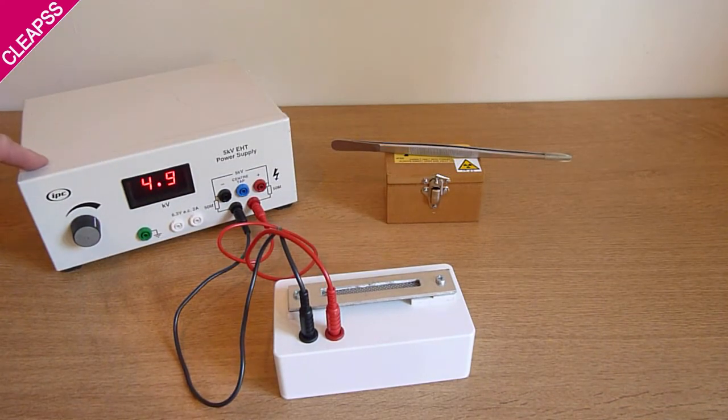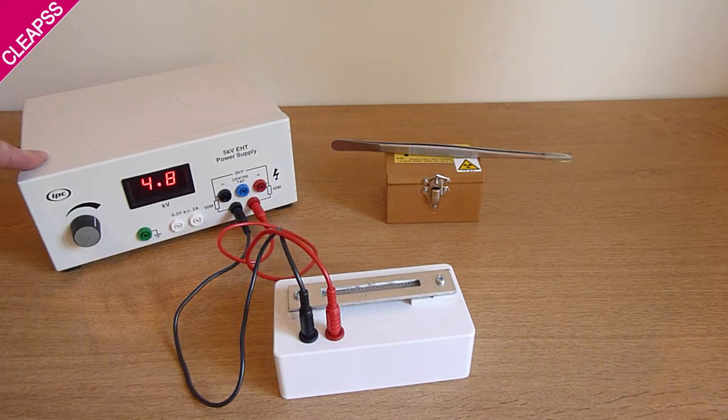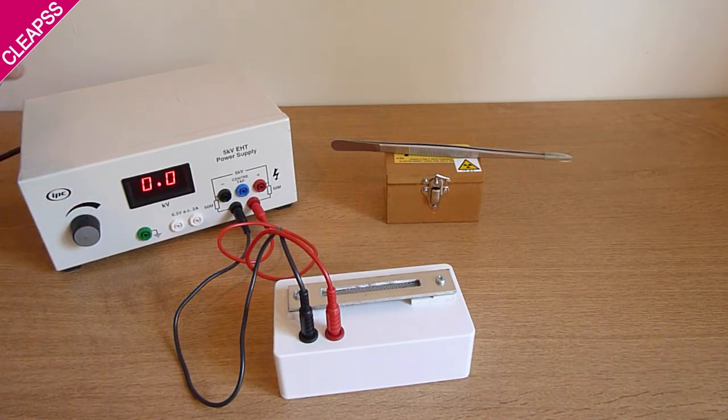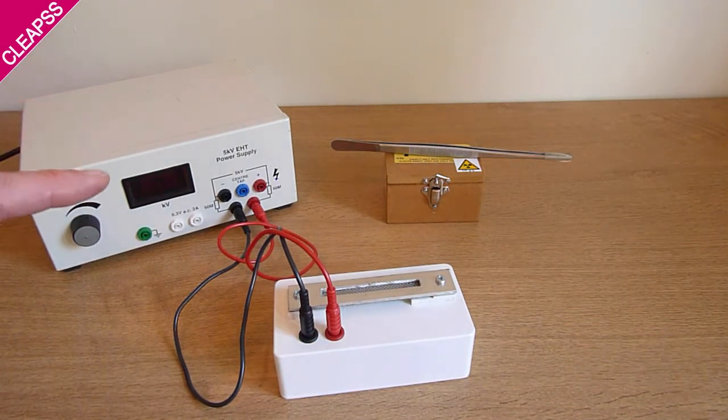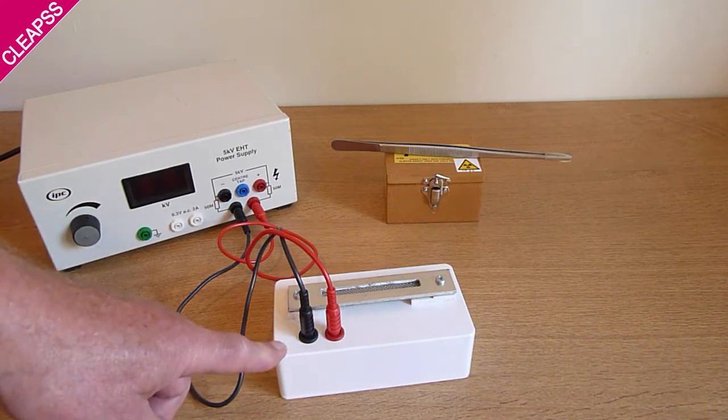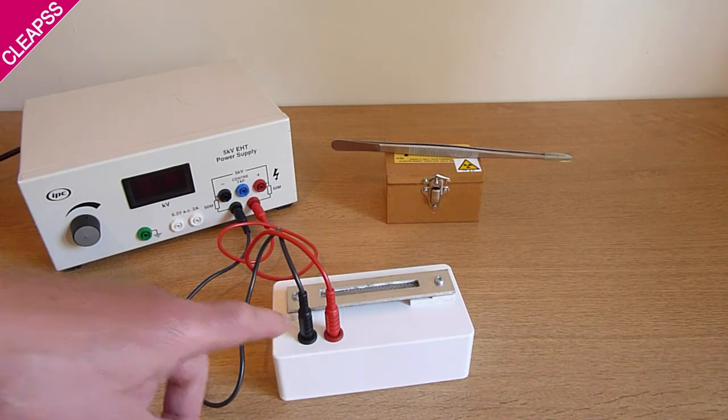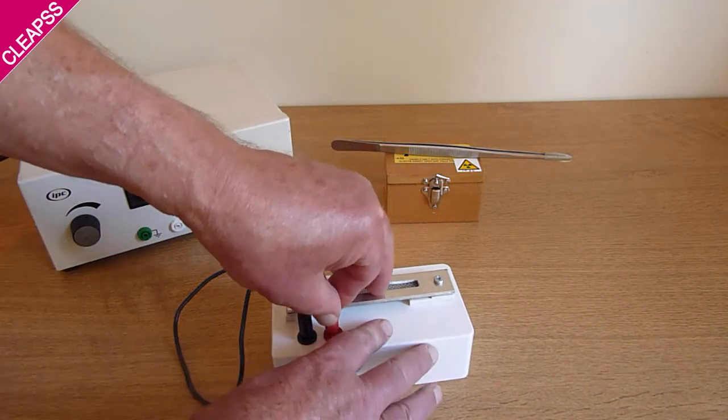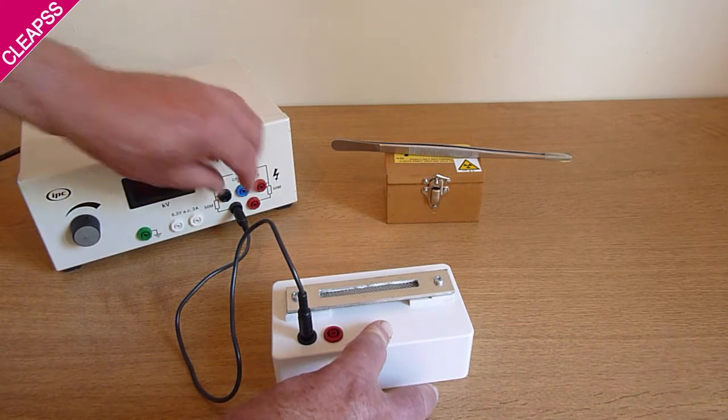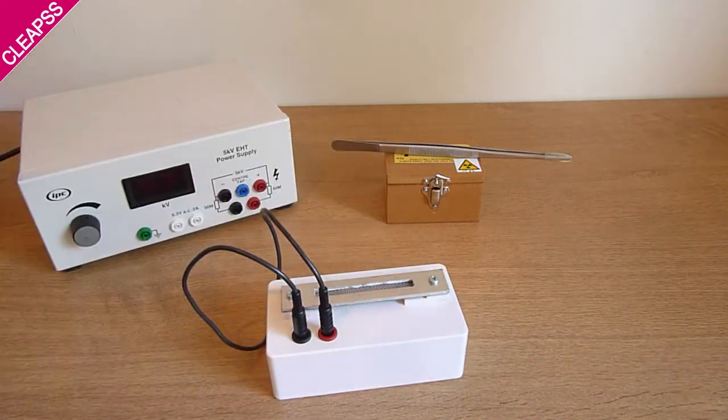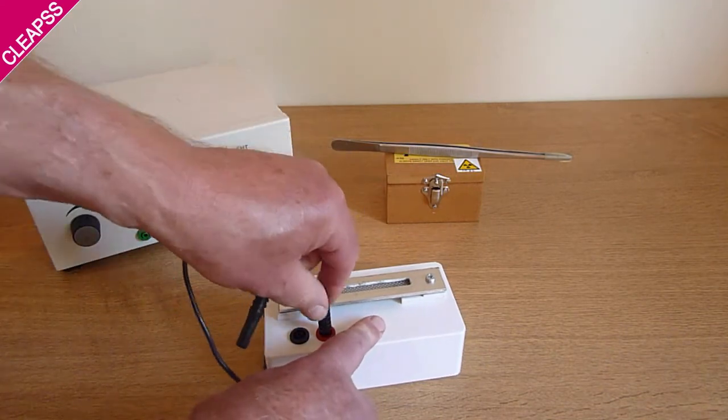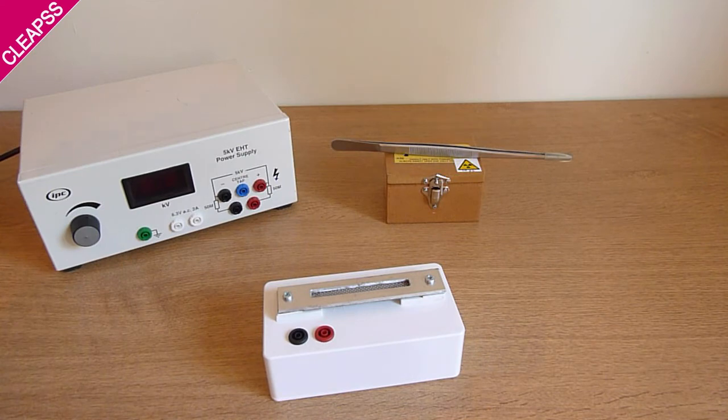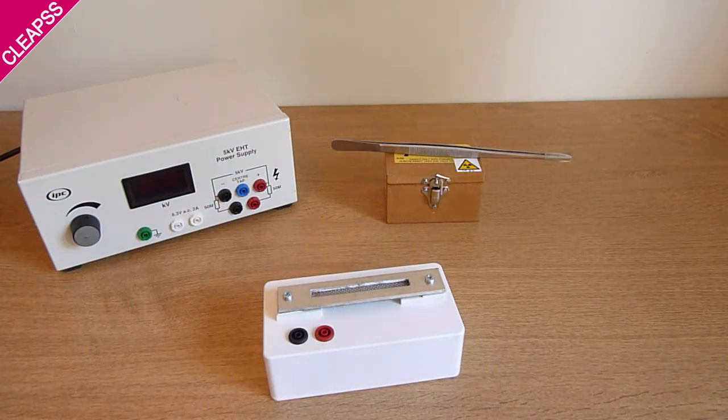Now the EHT unit, this is an IPC, same as the Griffin one, must be current limited to less than 5 milliamps. So if you were to touch the contacts accidentally, it'd be a very unpleasant shock, but no more than that. I've finished. I'll just turn the voltage down to zero and turn it off. One thing to be careful here - there's a capacitor inside the spark counter. If you accidentally touch the contacts, you can get a very unpleasant shock. So I will just short out the contacts and that stops that from happening. And that shows me handling a standard cup sealed source.